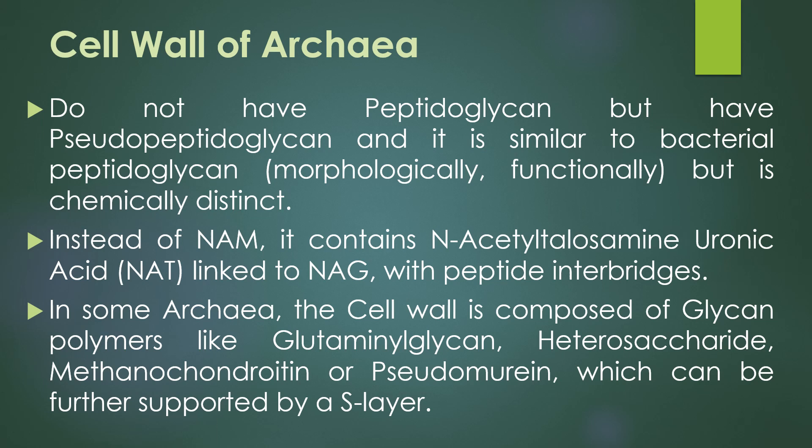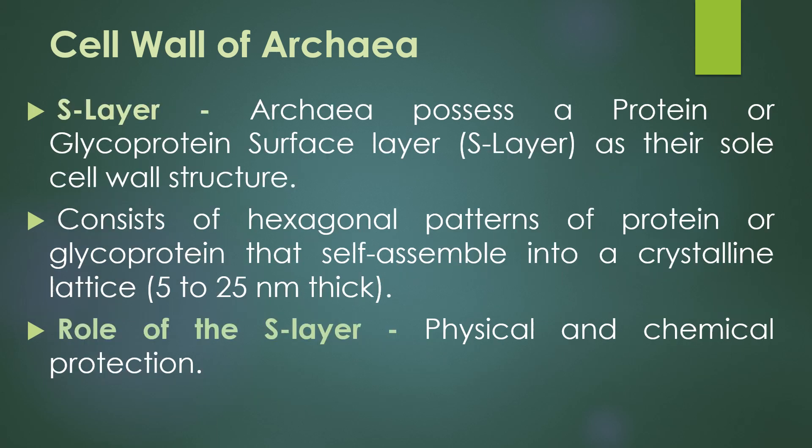In some archaea, the cell wall is composed of glycan polymers like glutamine glycan heterosaccharides, methanocondroitin, or pseudomurein, which can be further supported by an S-layer. Many archaea possess a protein or glycoprotein surface layer known as the S-layer.